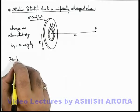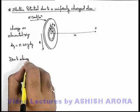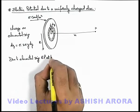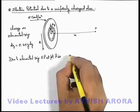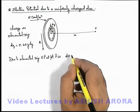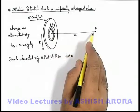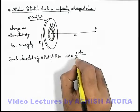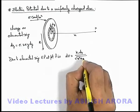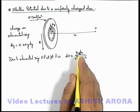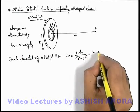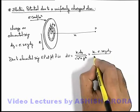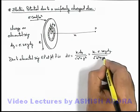Due to elemental ring, electric potential at point P is dV. The result due to a ring at an axial point can be written as k dq by root of x² plus y². Substituting the value of dq, this is k multiplied by sigma times 2πy dy divided by root of x² plus y².